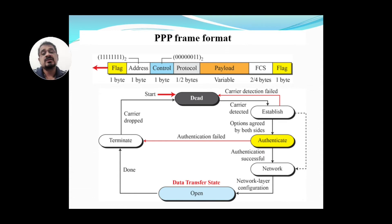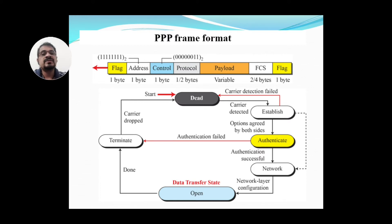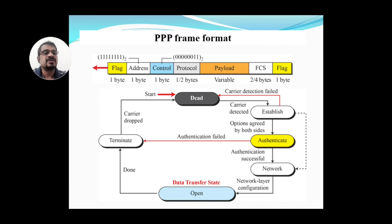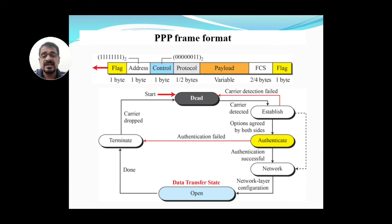If the carrier fails due to a weak signal or other technical reasons, it goes back to the dead state. Once the carrier is detected and the connection is being established, both parties agree on connection parameters — for example, one party may get 1 Gbps and another may get 10 Gbps. Once agreed, the connection is established and authentication is initiated.